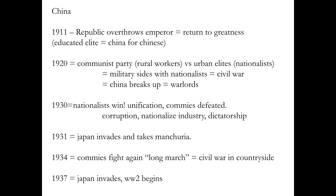The Nationalists could make some money and had the military, so they could probably squash the Communists — as long as nothing bad happened. But something bad did happen: in 1931 Japan invades and takes over Manchuria, where all the resources were — all the mining, the metals, all the stuff you need for those industries the Nationalists just industrialized. Japan needed that coal, iron, and copper because it was industrializing. In 1934 the Communists fight again, are defeated again, and what happens is the Long March.